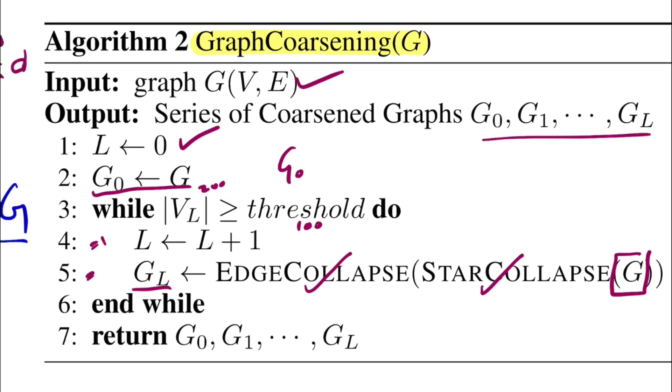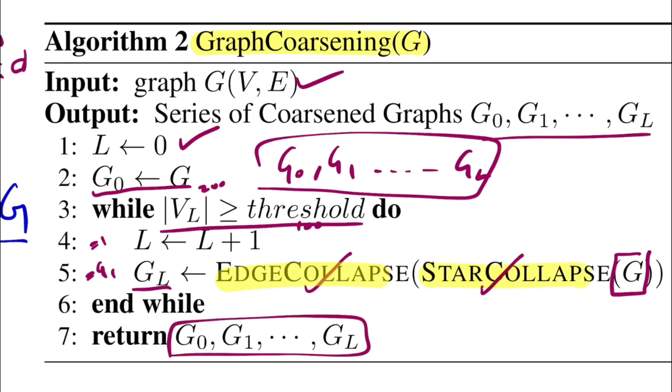Now level becomes one. You do a star collapse followed by edge collapse function on the original graph G and get a new version of G for that level. Now you have G1. You check the number of vertices for G1. If it's greater than or equal to threshold, you again increase L by one. Now L equals two. You again apply the collapsing function on the original G and calculate the number of vertices. You keep repeating this till the while condition holds false, which means the graph at that level has number of nodes less than 100. Let's call it GL. Once you've obtained all these graphs, you return from this function.